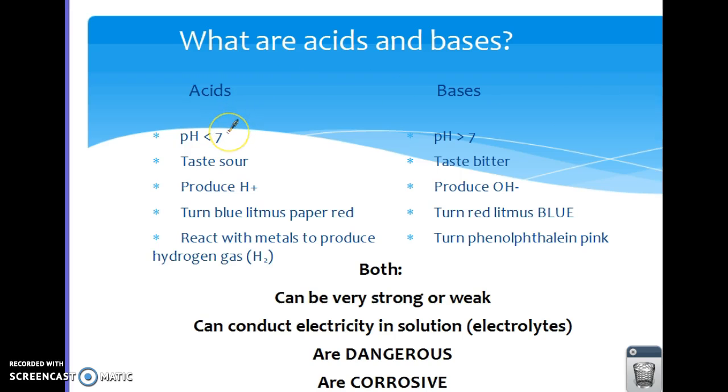Acids have a pH of less than 7. They will taste sour. They will produce hydronium ions (H+), and in fact, their first letter of their compound will indeed be an H for hydrogen.